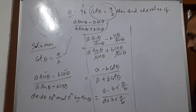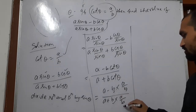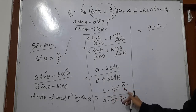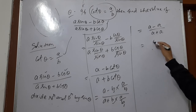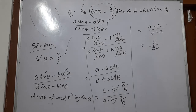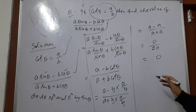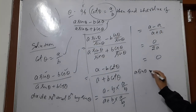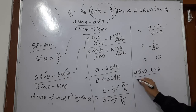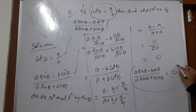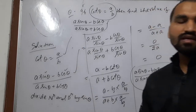Now we put the value of cot theta which is a by b. So the expression becomes a minus b times a by b, divided by a plus b times a by b. Here b and b cancel out, giving a minus a in the numerator and a plus a in the denominator. So it is 0 by 2a, which equals 0. Our final result is that a sin theta minus b cos theta divided by a sin theta plus b cos theta equals 0, given that cot theta equals a by b.